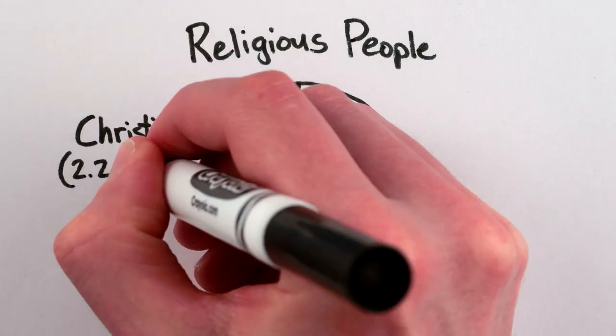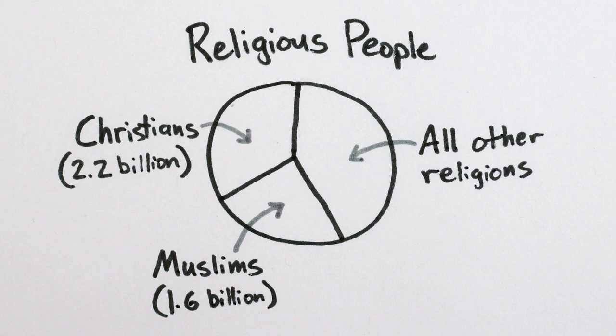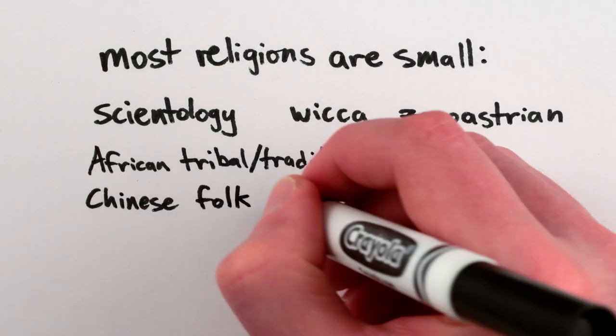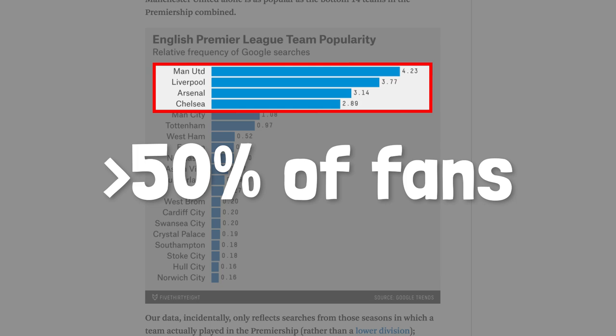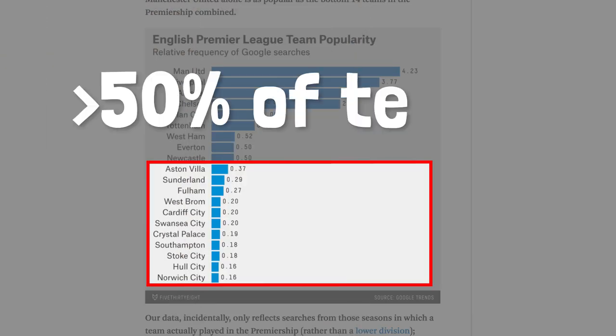And the majority of religious humans are members of religions with more than a billion followers, while the majority of religions have fewer than a million followers. And the majority of people who follow the English Premier League are fans of teams with hundreds of millions of fans, like Manchester United, while most teams have just a few million fans each.